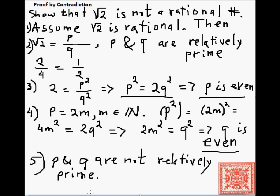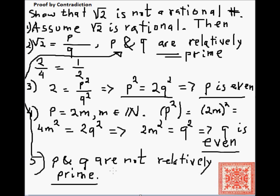And that's a contradiction — it contradicts our assumption that p and q are relatively prime. Which means that the square root of 2 is not a rational number. Since we have derived a contradiction, that means the square root of 2 cannot be equal to any p over q where p and q are relatively prime. Hence, the square root of 2 is not a rational number.